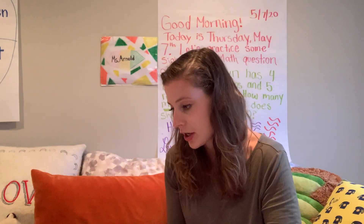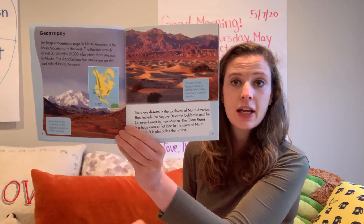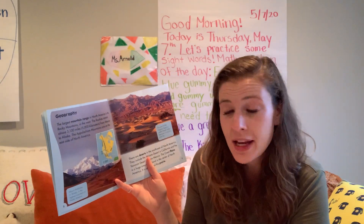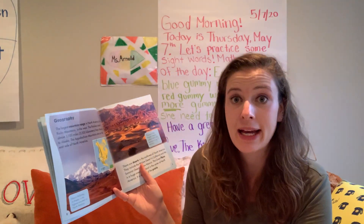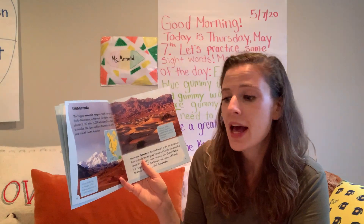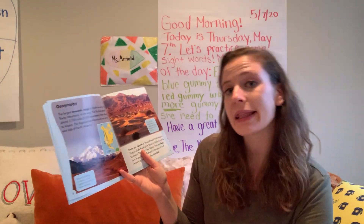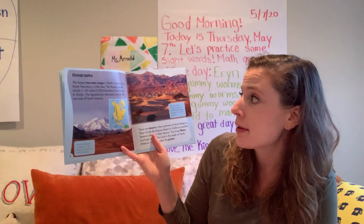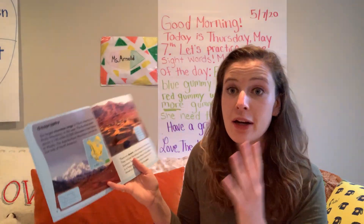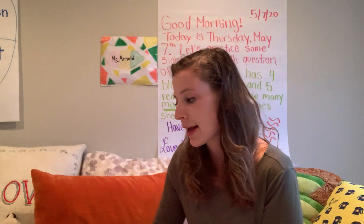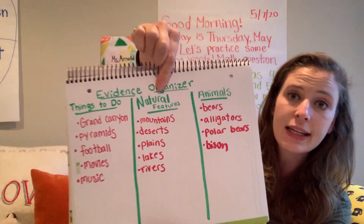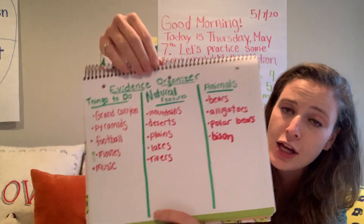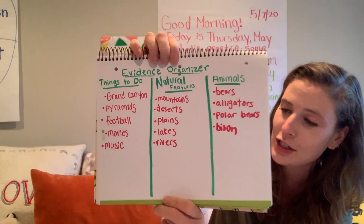Then we're going to go to the next page which says geography. This page has some information about the natural features that North America has — things like mountains, deserts, or lakes, things that people did not create. The largest mountain range in North America is the Rocky Mountains. I'm going to write that under my second category, natural features. And remember, if I'm going too fast and you're trying to make this, you can pause the video.